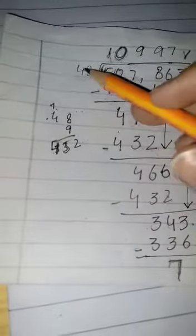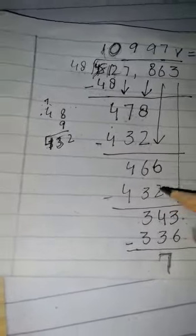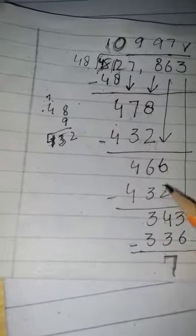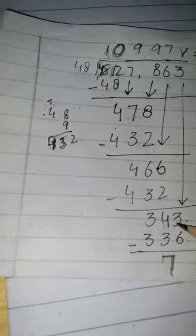Again 9 pe 48, 9s are 432 minus kiya. 6 mein se 3, 3. 6 mein se 2 minus kiye 4. Aur yeh wala 3 hum ne idhar write kar diya.